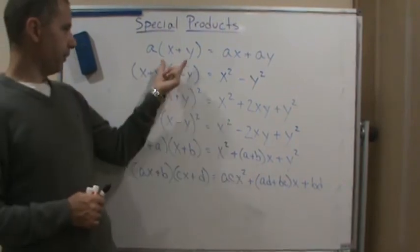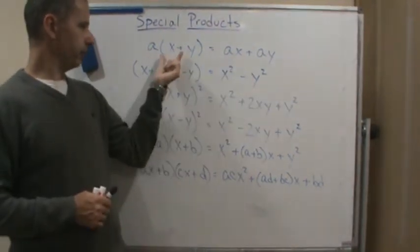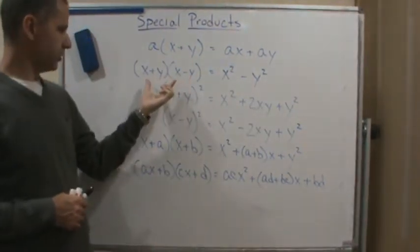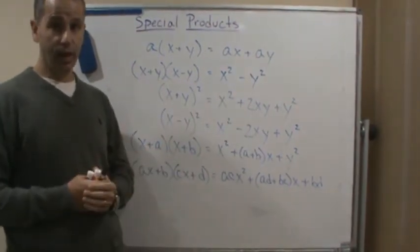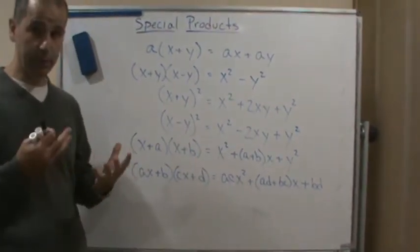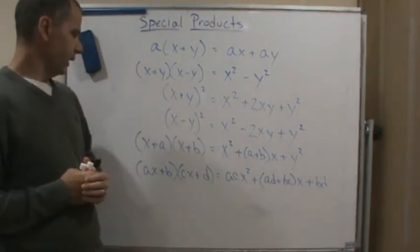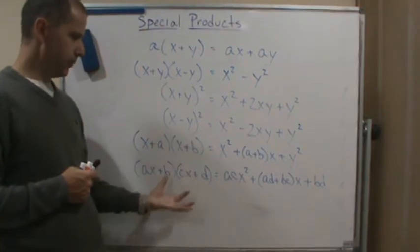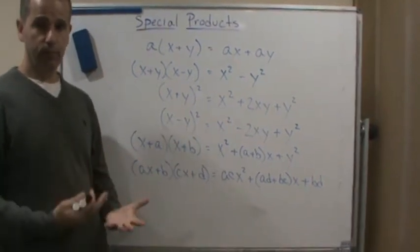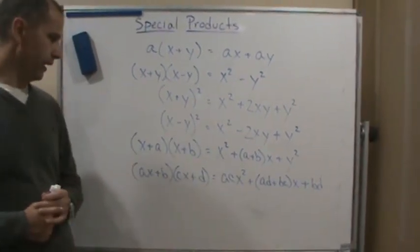For example, this is just the distributive property, right? This one is actually using the distributive property twice and then just using basic operations to simplify it. And in fact, all of these are pretty much using the distributive property along with basic operations to simplify the expression.